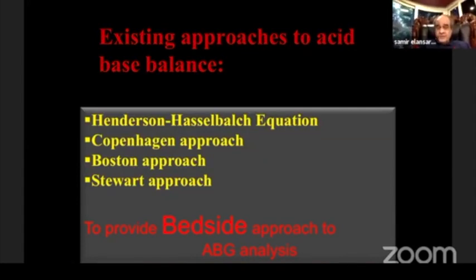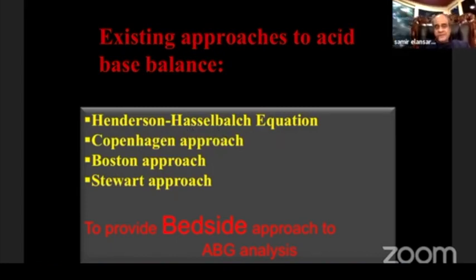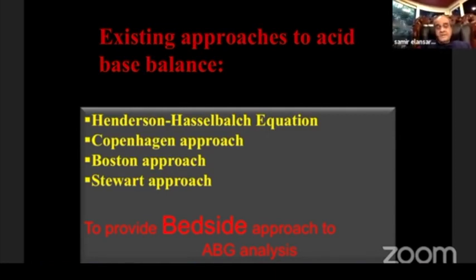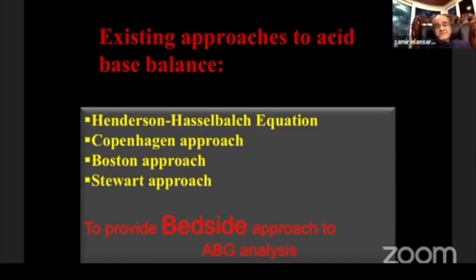For interpretation of ABG, there are many systems: the Henderson-Hasselbalch equation, the Stewart approach, the Copenhagen approach, and the Boston approach. We concentrate today on Henderson-Hasselbalch. Stewart, a Canadian physiologist, created his approach 30 years ago — it is very competent and depends on the strong ion difference, calcium, magnesium, sodium, and the difference with anions like chloride and lactate. We concentrate on Henderson-Hasselbalch, which becomes very complete when we add anion gaps, delta gaps, osmolar gaps, and urinary gaps.